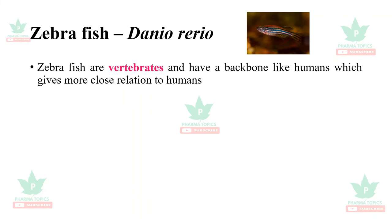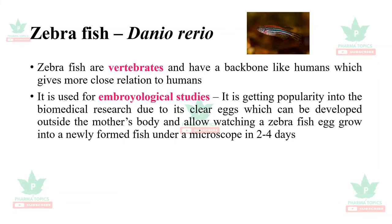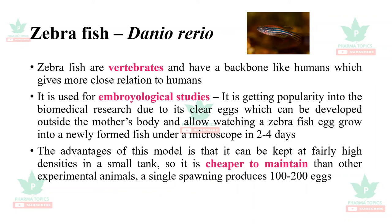Zebrafish, Danio rerio, are vertebrates with a backbone like humans, giving a closer relation to humans. They are used for embryological studies and are gaining popularity in biomedical research due to their clear eggs, which develop outside the mother's body, allowing observation of a zebrafish egg growing into a newly formed fish under a microscope in approximately two to four days. They can be kept at high densities in small tanks, making them cheaper to maintain, and a single spawning produces 100 to 200 eggs.